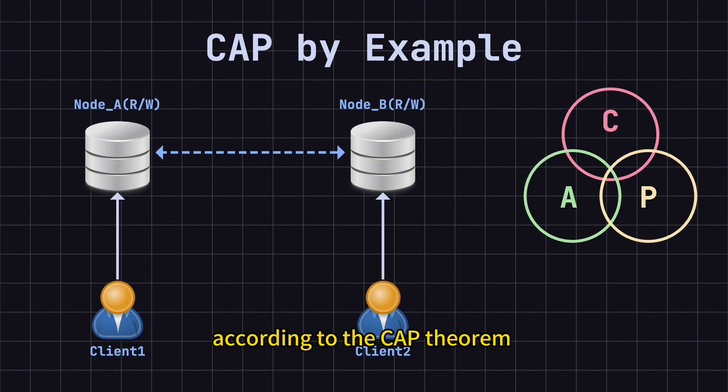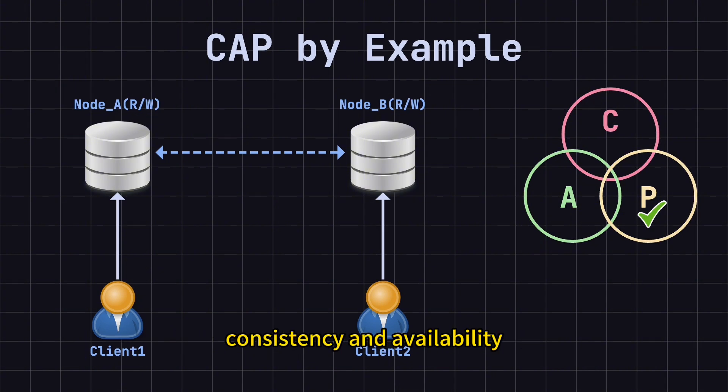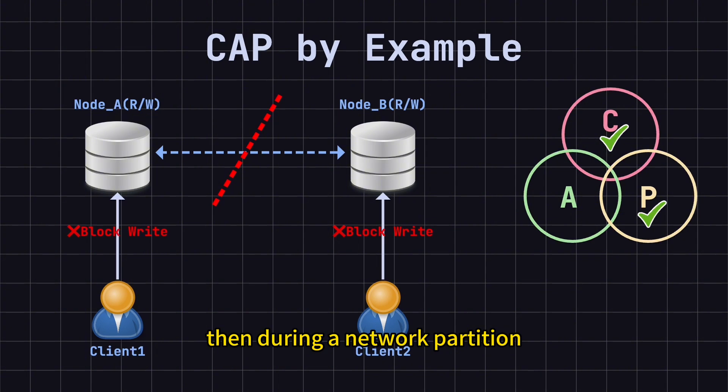According to the CAP theorem, in a distributed system, you can't guarantee consistency, availability, and partition tolerance all at once. You must choose two. In reality, any distributed system involves a network, and networks can fail, so partition tolerance, P, is something we must accept. That leaves us with a trade-off between consistency and availability. Here are the two main trade-offs. First, CP System. If we prioritize consistency and partition tolerance, then during a network partition, to maintain consistency, write operations might temporarily be unavailable, sacrificing availability.